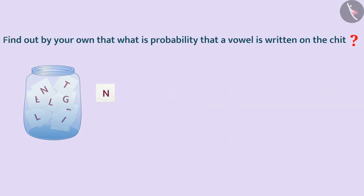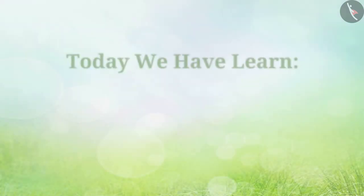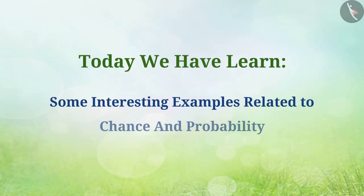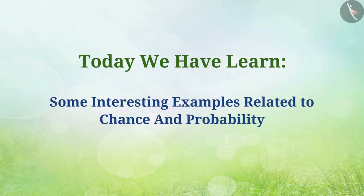Now, you can find out by your own what is the probability that a vowel is written on the chit. So, today we have learned some examples related to chance and probability. In the next video, we will see some misconceptions related to chance and probability.